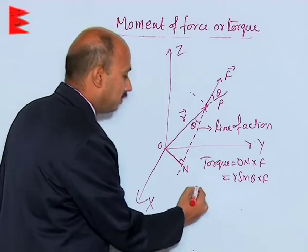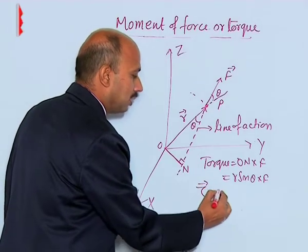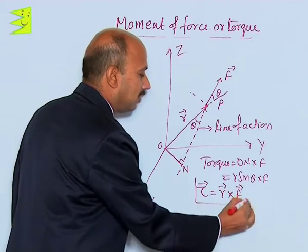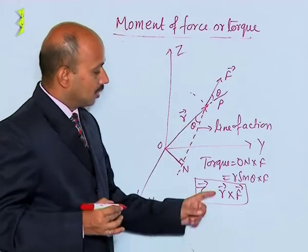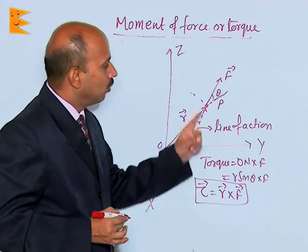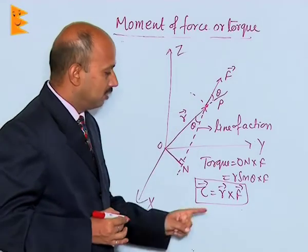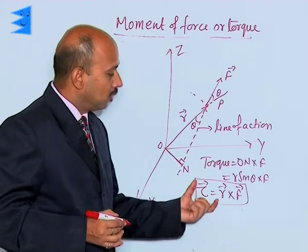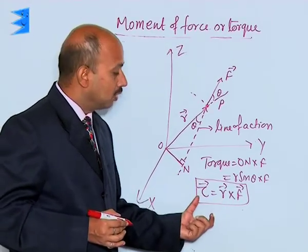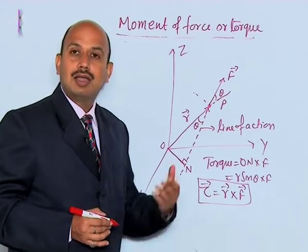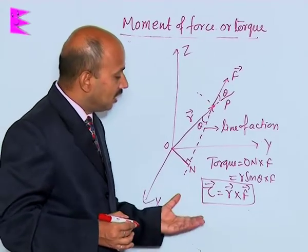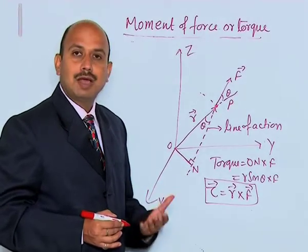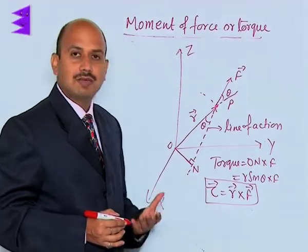In vector form, torque can be written as tau equals R cross F. So torque is defined as the cross product of the position vector and the force acting on the particle, where the position vector is taken with respect to the origin. The direction of torque is perpendicular to the plane containing R and F, and this direction is given by the right-handed screw rule.